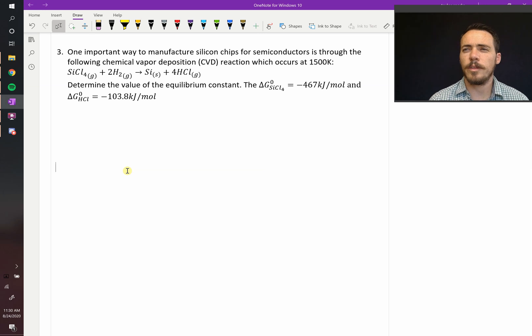Let's do a third example of a thermodynamic calculation. This time we're going to use one that's relevant to industry. When they make silicon chips for semiconductor processing, one of the popular ways to do it is to actually start out in the gas phase and then break it down to form solid silicon.